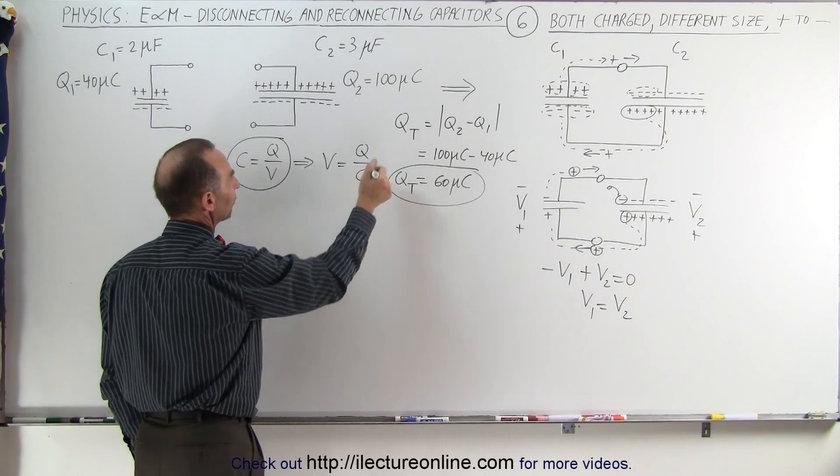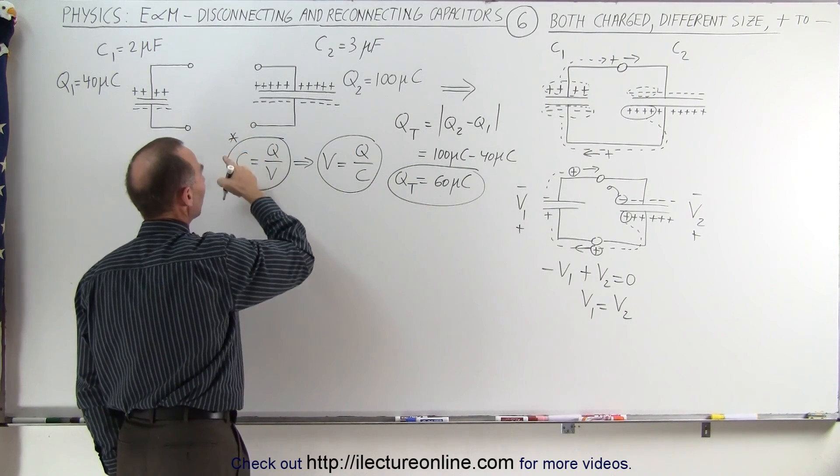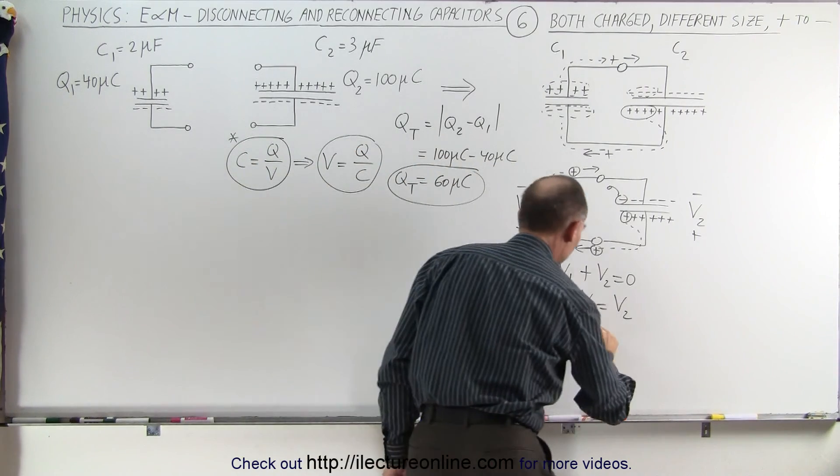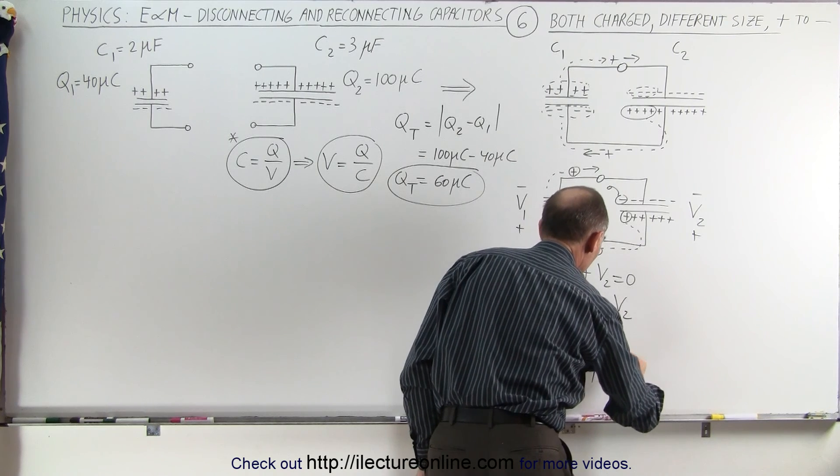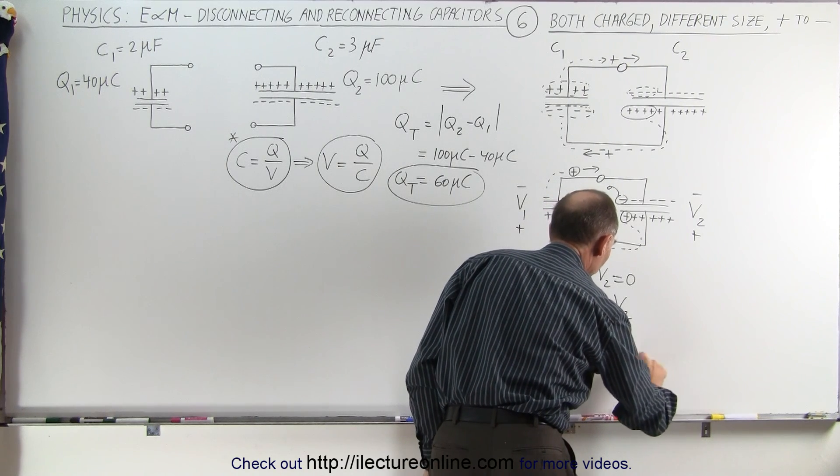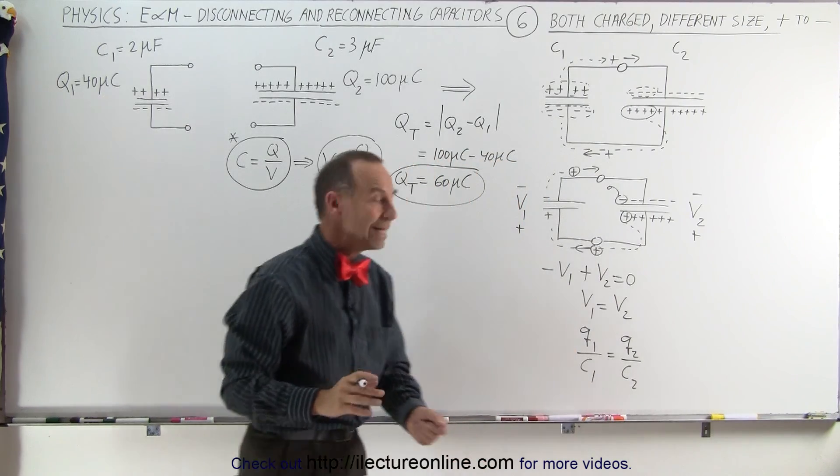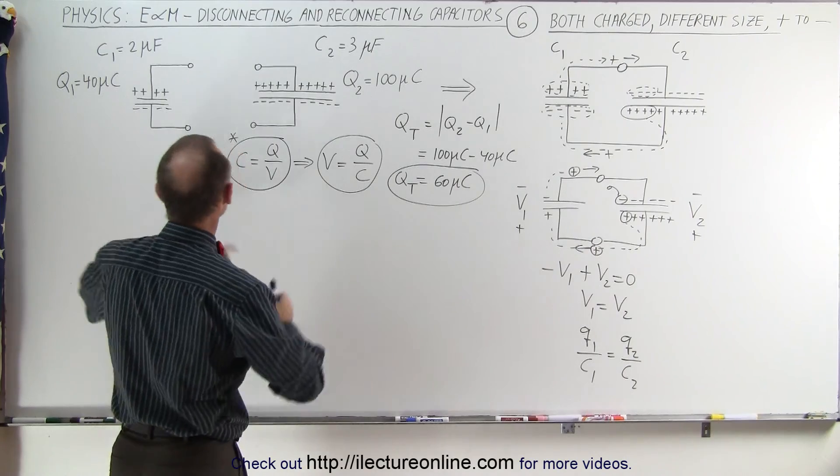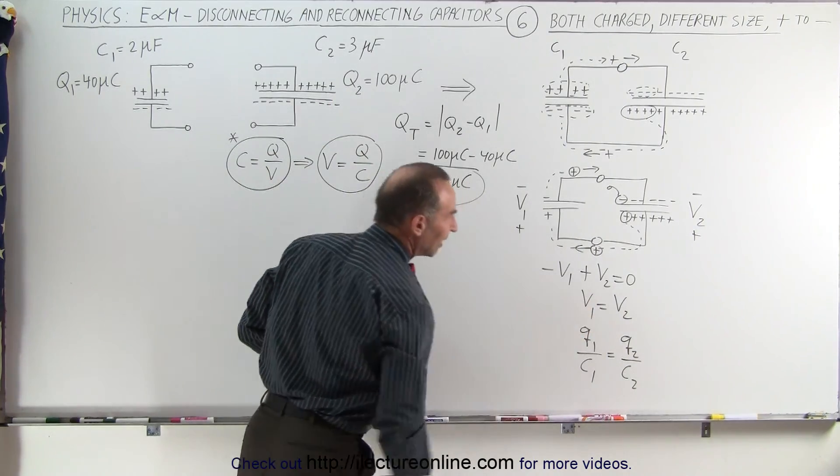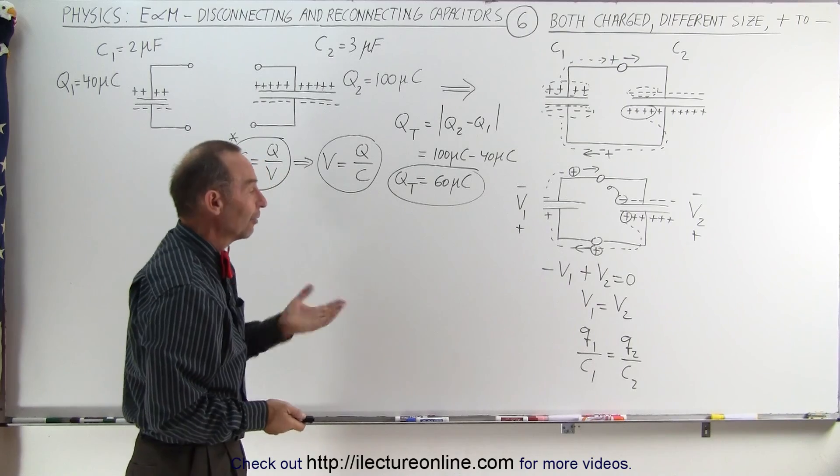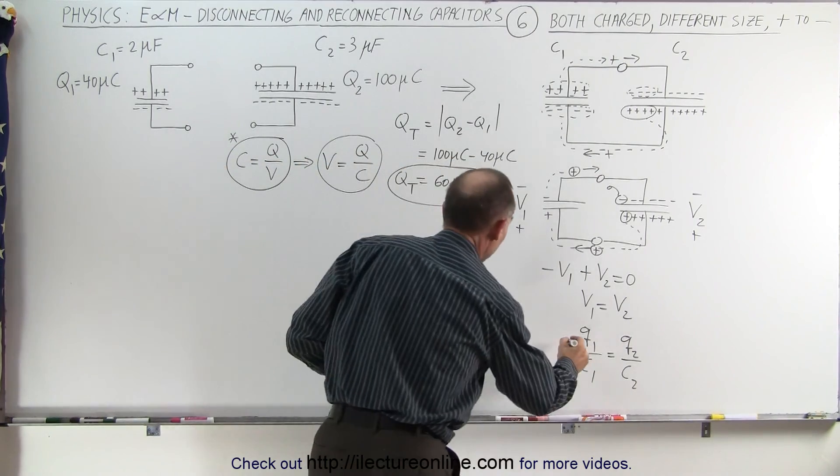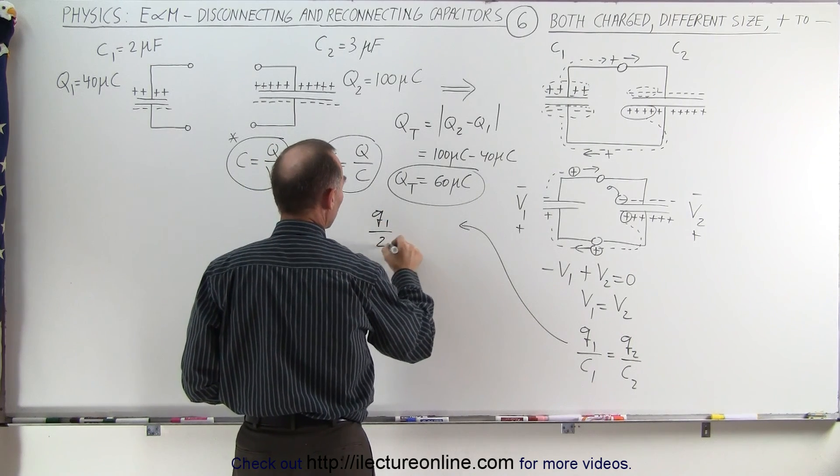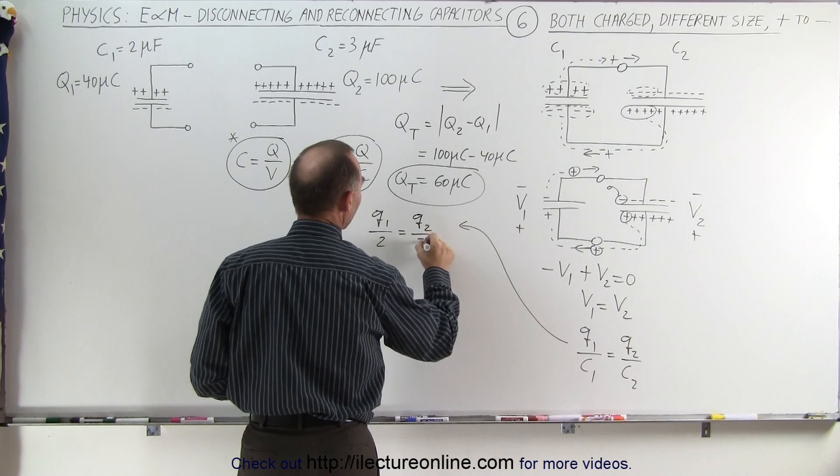Using the definition of capacitance over here, that's the definition we solve for V, we get as a ratio Q divided by C, which means that Q1 over C1 must equal Q2 over C2, Q1 and Q2 being the final charges on the two capacitors. So my notation is that if you see a big Q, it's the initial charge, small Q is the final charge. And of course, since we know what C1 and C2 is equal to, we can write that Q1 divided by 2 is equal to Q2 divided by 3.